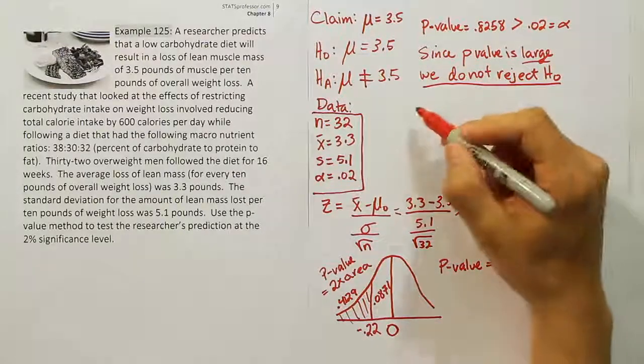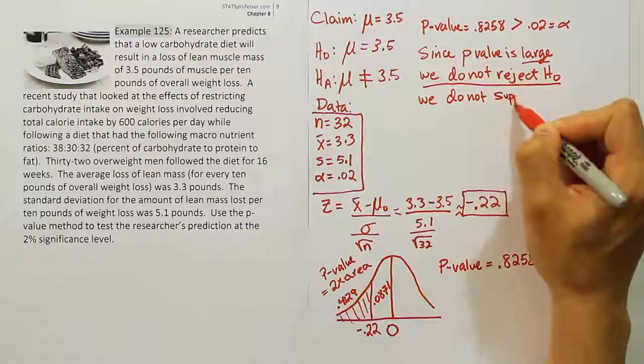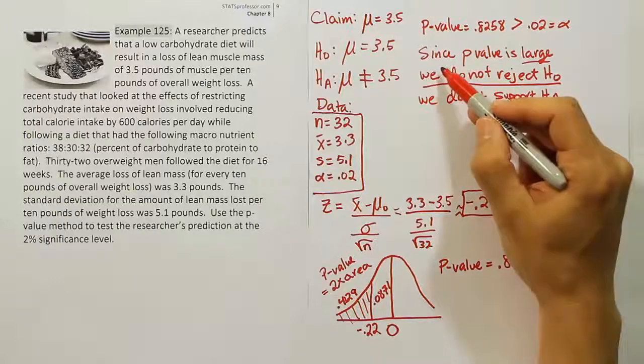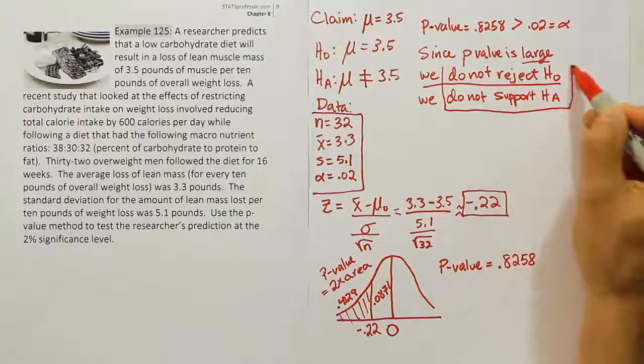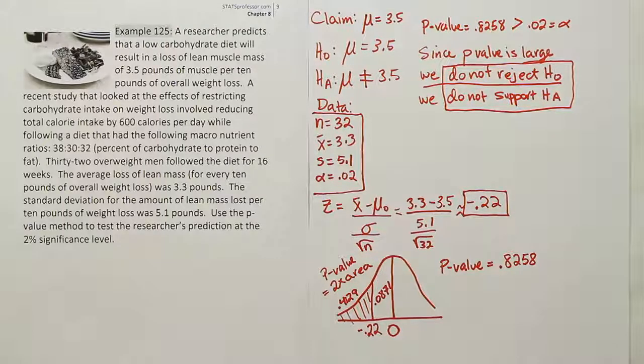That means we do not support the alternative hypothesis. This is our initial conclusion - we do not reject the null and we do not support the alternative.